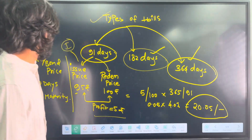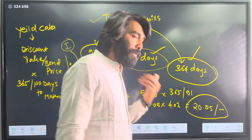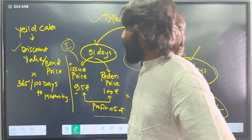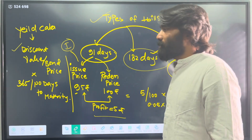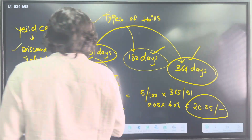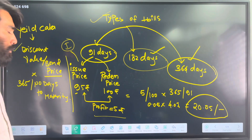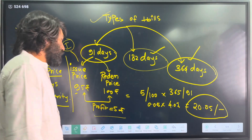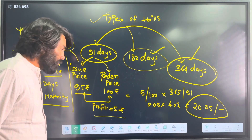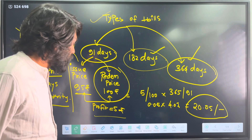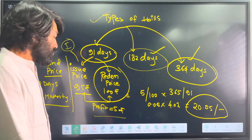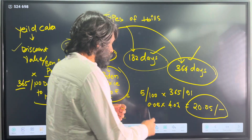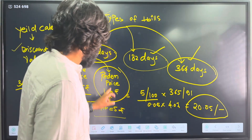Let's discuss how to calculate yield for T-bills. Yield means income — how we can compute income on bills. The formula is: Yield = (Discount Value / Bond Price) × (365 / Number of Days to Maturity). For example, under 91-day T-bills, if you purchased securities at a price of 95 and the redemption value is 100, the difference is 100 minus 95, which equals 5. So your net benefit is 5 rupees over 91 days.